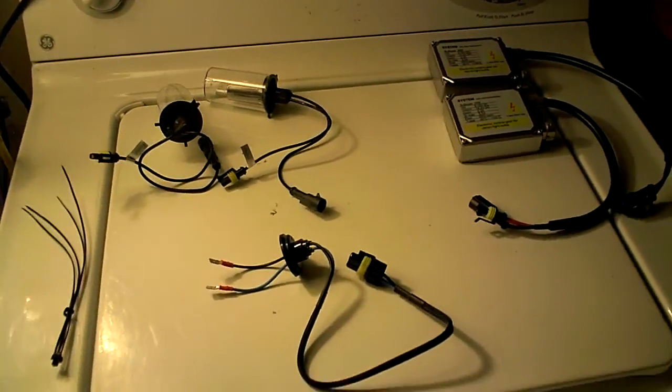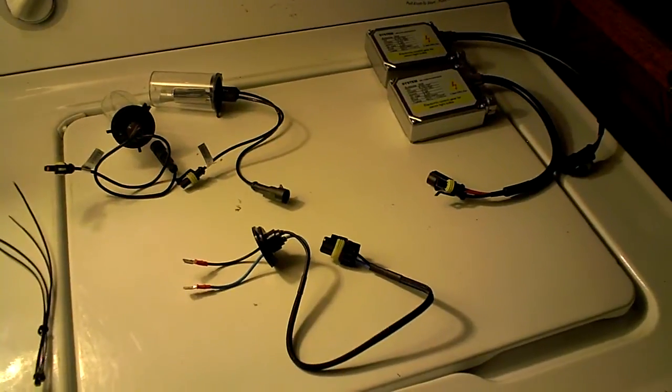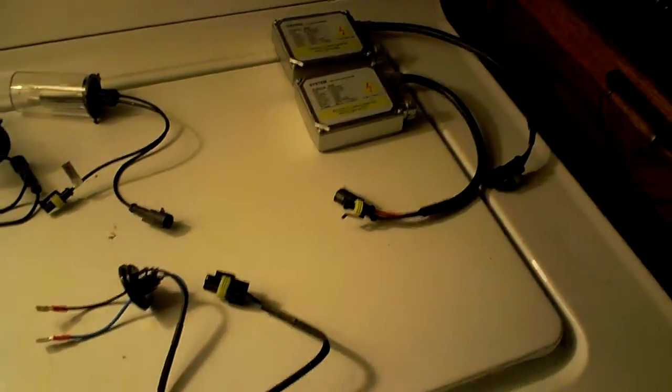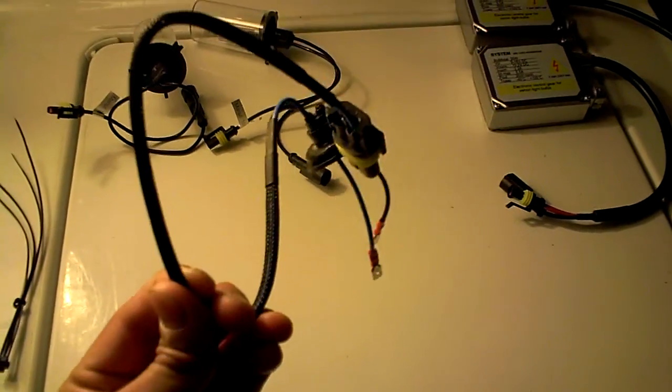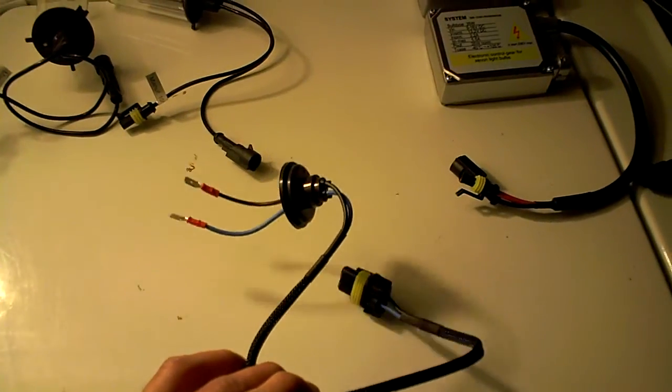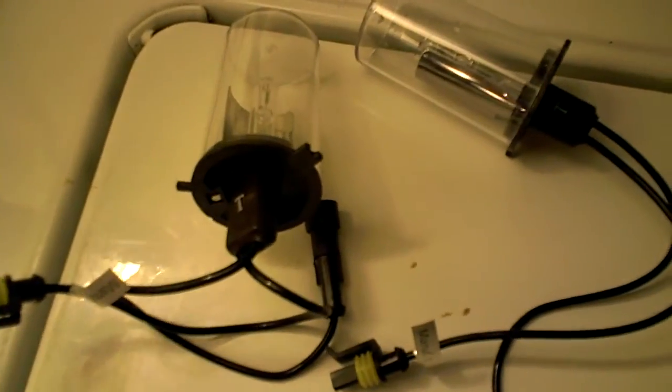Anyways, pretty much this is the kit you will receive. This is not the slim ballast kit. This is a spare kit, so for some reason when I was packing everything away I realized that I was missing one of these, but you will get two of these. Pretty much you will get two bulbs, and here's what the bulb looks like.